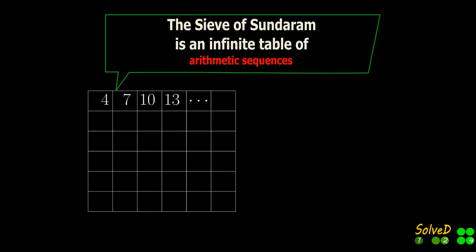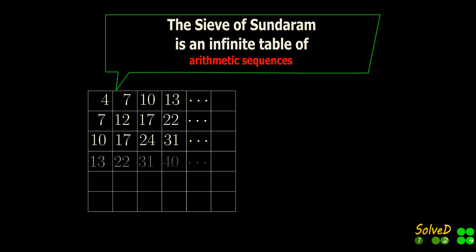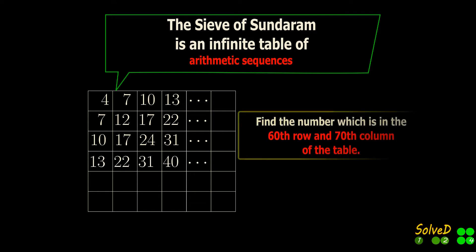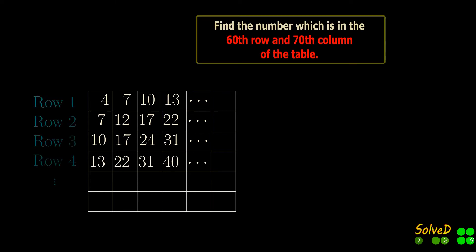The Sieve of Sundaram is an infinite table of arithmetic sequences. Find the number which is in the 60th row and 70th column of the table.